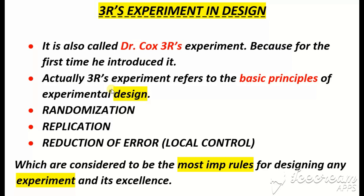The Three Rs experiment refers to the basic principles of experimental design. When we design any experiment, there are certain rules, regulations, and principles upon which a good experimental design can be built. Those principles are: Number one — Randomization; Number two — Replication; and Number three — Reduction of Error.